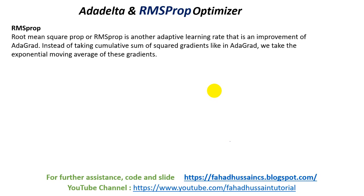We can see the exponential average of these gradients, and we can see the drawback of those extra features as well — because of the value of the learning rate going down, that thing is there. This is the drawback that we discussed in the previous session, and that thing is handled by RMSProp. Let's understand the math so that we can understand better.